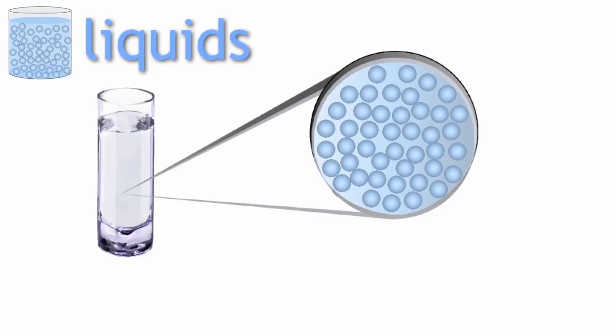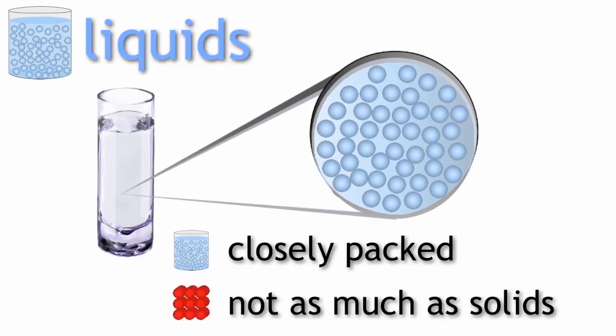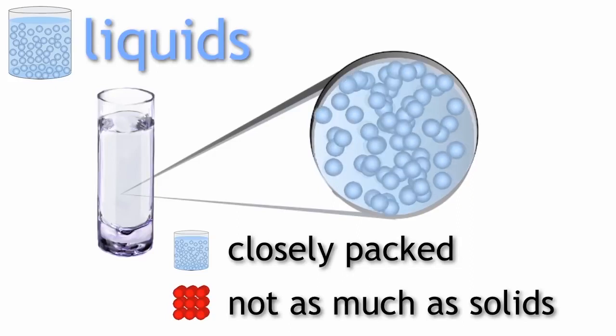Just as with solids, the properties of liquids depend on how the particles in liquids are packed. In a liquid the particles are again closely packed, but not as closely packed as in solids. So this means the particles in liquids can move around each other.